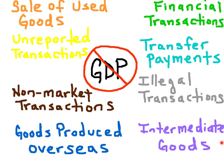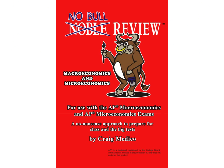Also excluded are intermediate goods — goods used during the manufacturing process that end up in the final good — non-market transactions or household work, and goods produced overseas. That wraps up our Noble Review session on the GDP, what's included and what is excluded. In the next video, we're going to go over nominal GDP versus the real GDP.